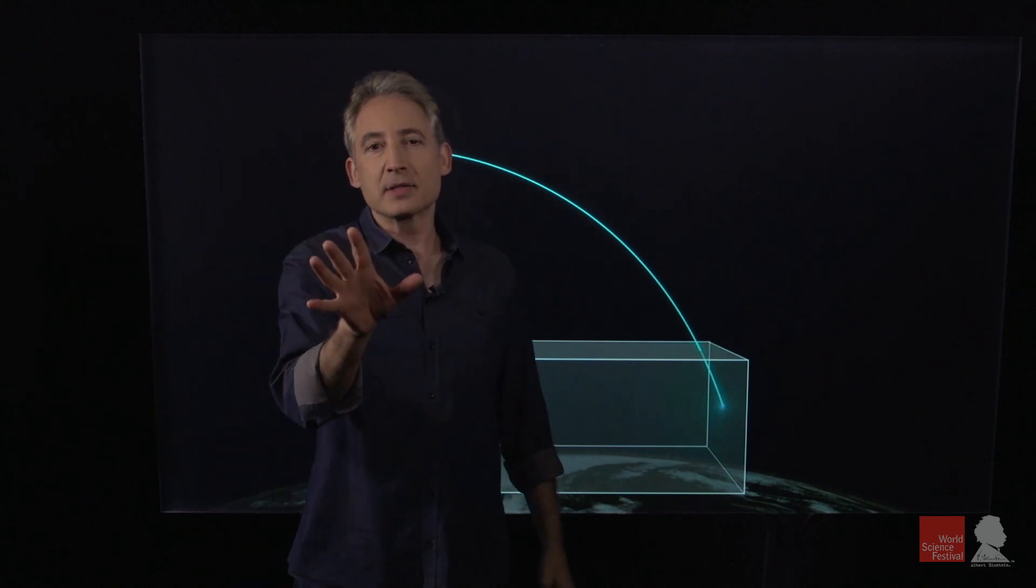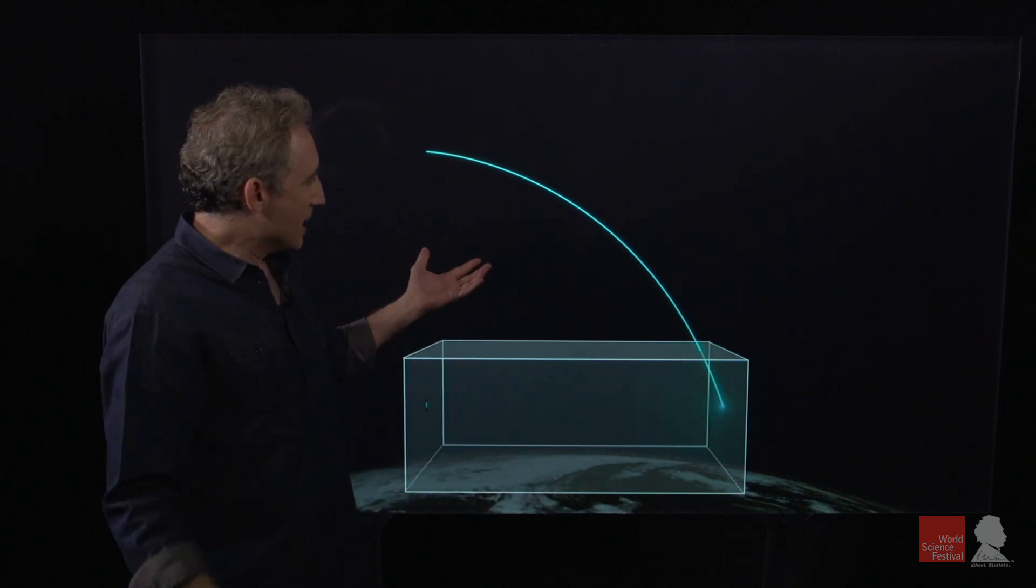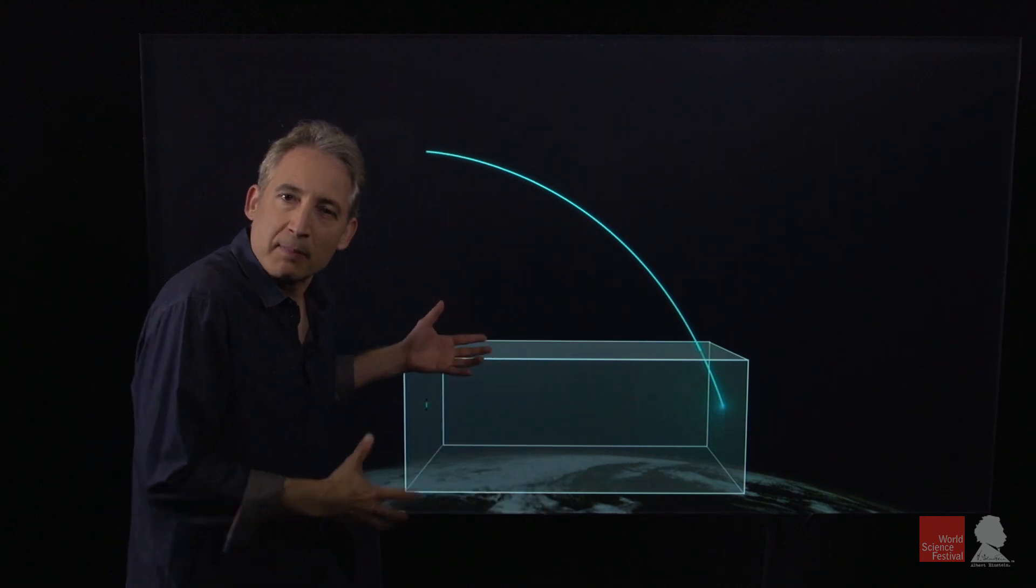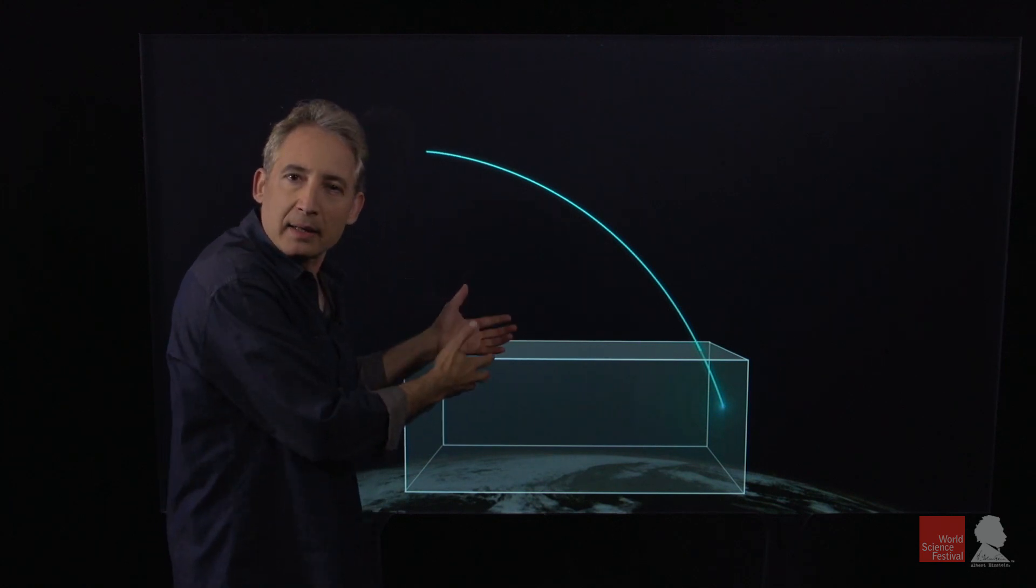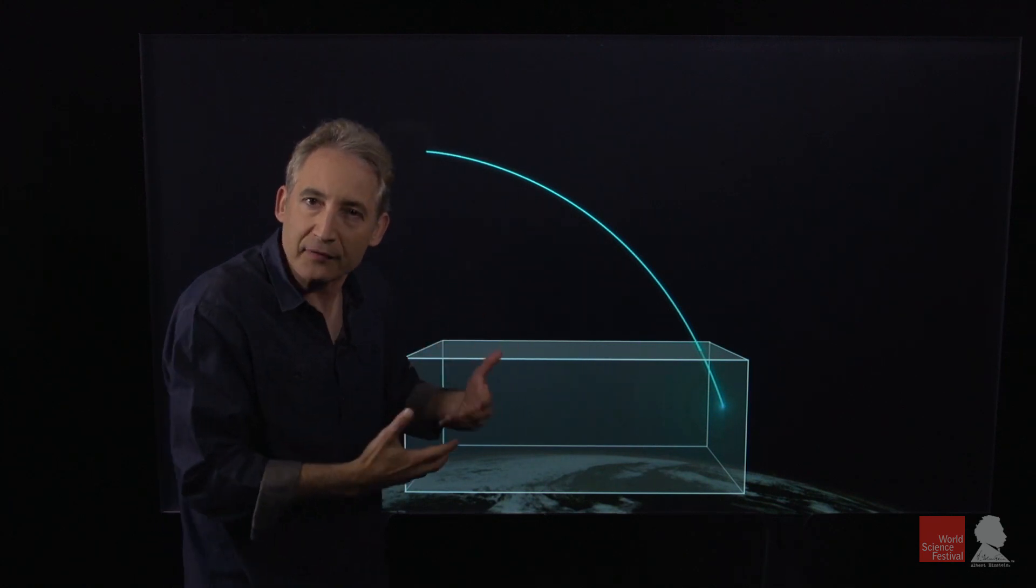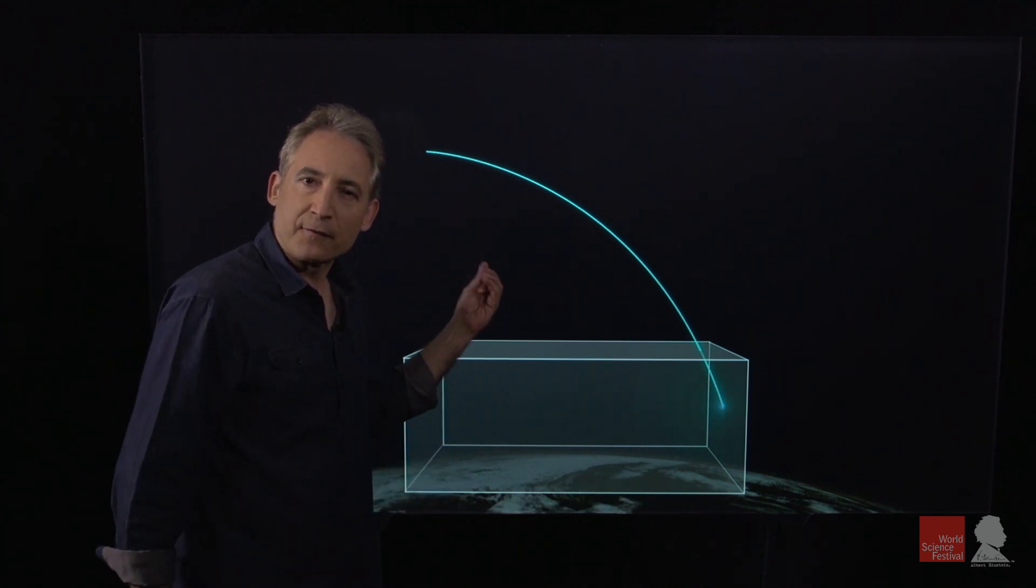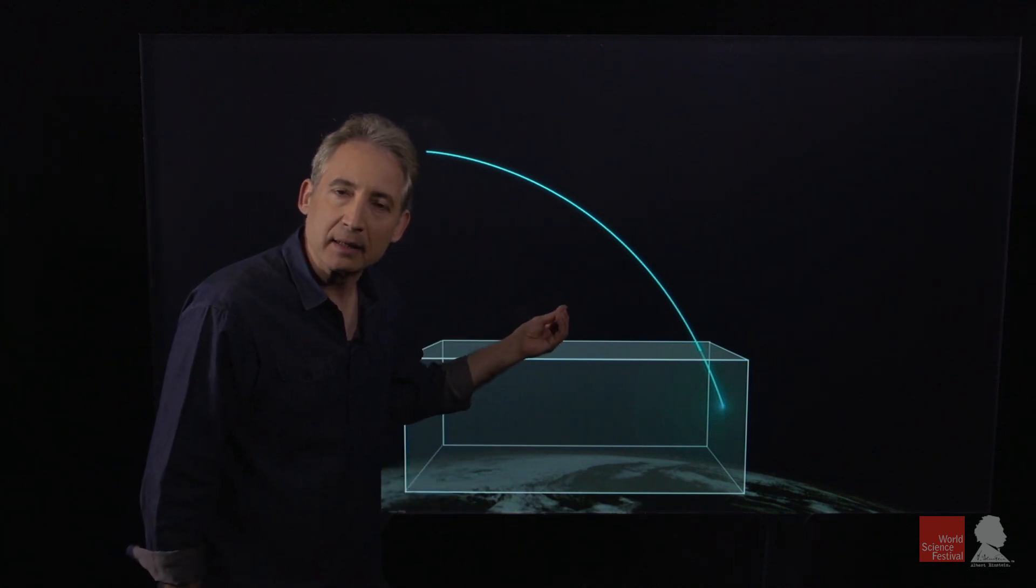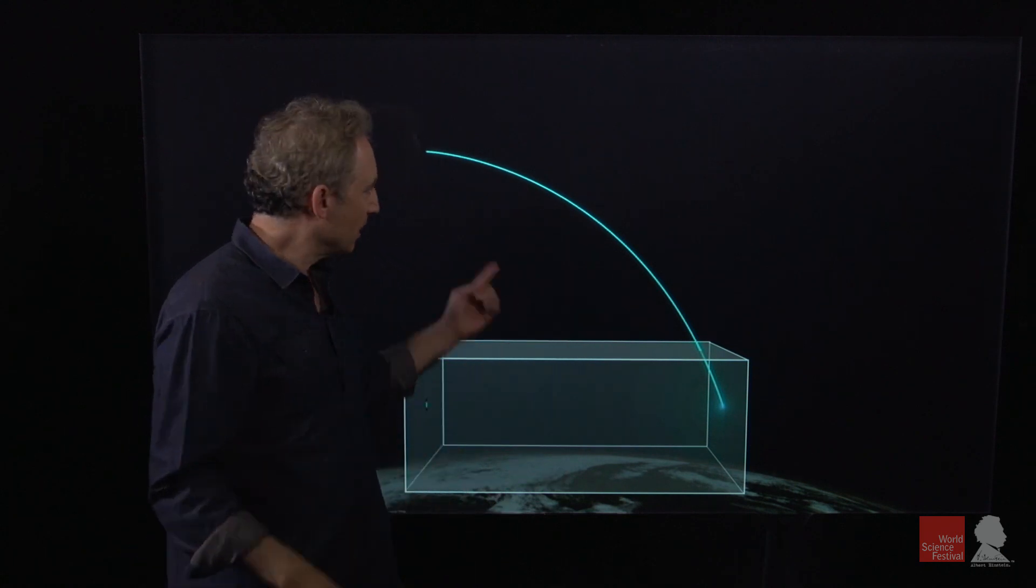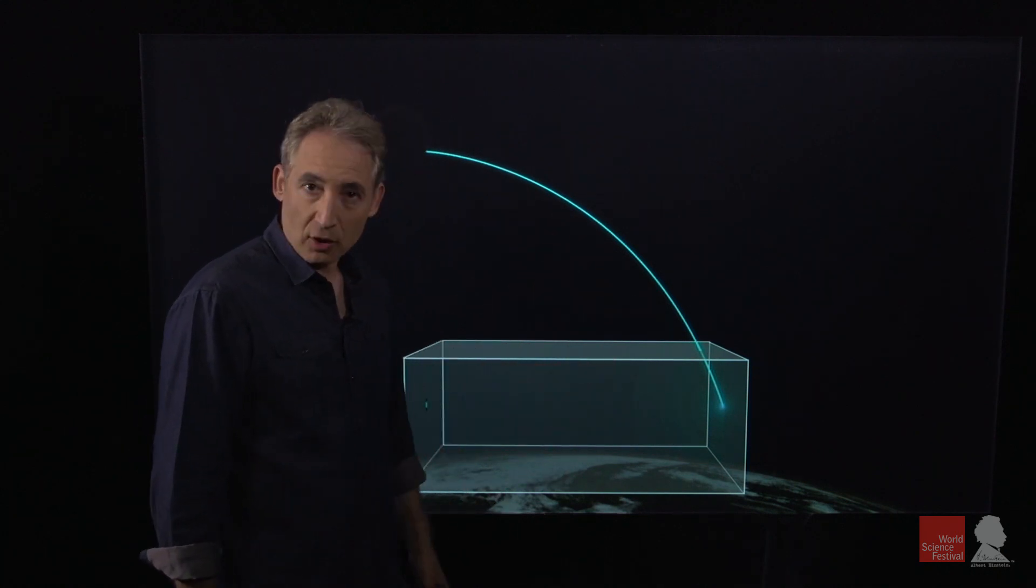Now look, it took Einstein a good eight years of work to put mathematical might behind this idea and work out the general theory of relativity. But it all kind of starts here with this first recognition of a link between gravity and curvature.